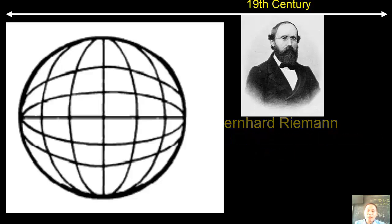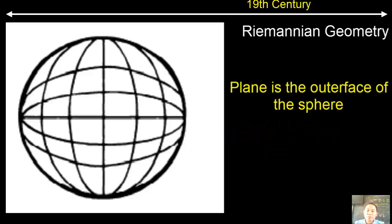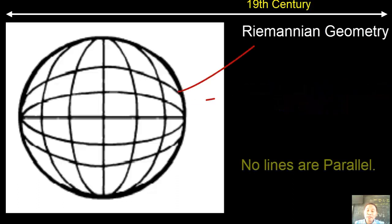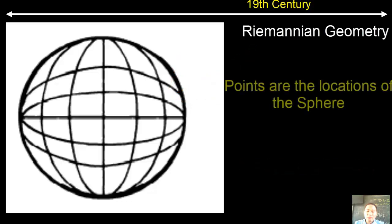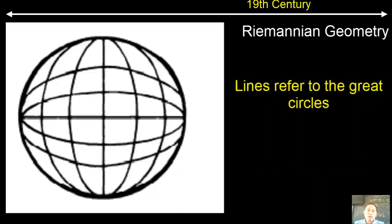So here is the visualization of Riemannian geometry. Plane refers to the surface of a sphere. We know that it is impossible to draw a straight line on a spherical surface because it is curved. Points refers to the location on that sphere, and lines here refers to the great circles.